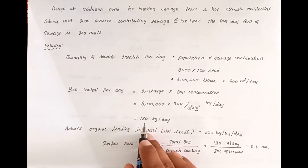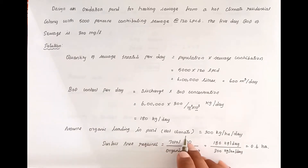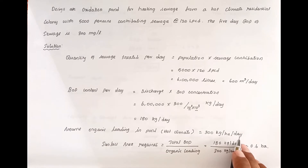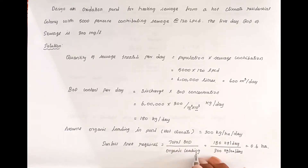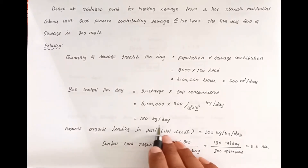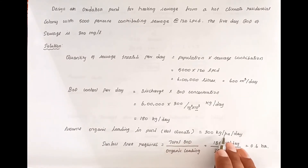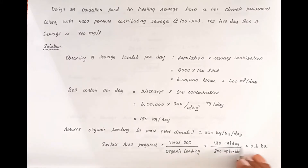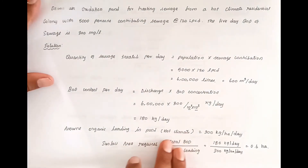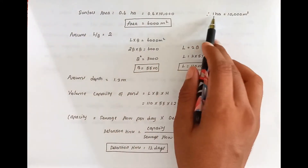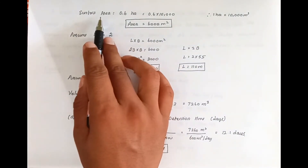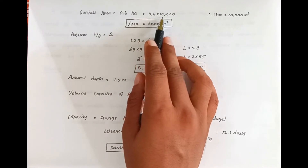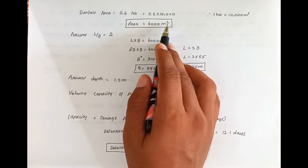Next, we have to find out the oxidation pond area. The formula for surface area required is total BOD divided by organic loading. The organic loading is 300 kg per hectare per day. So surface area equals 180 kg per day divided by 300 kg per hectare per day, which gives 6000 m² per day.